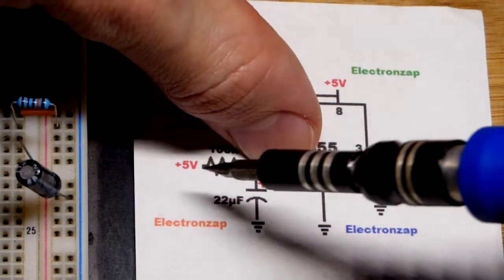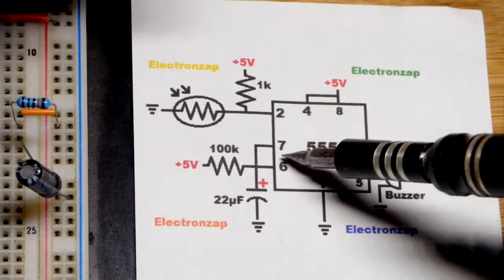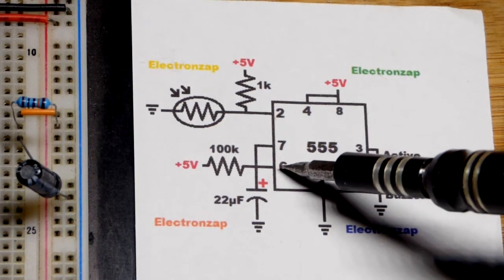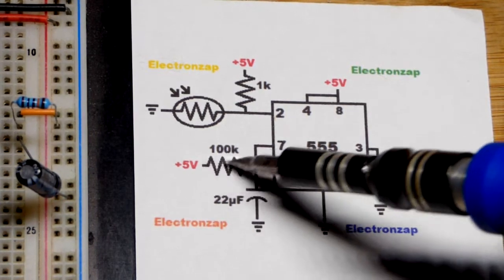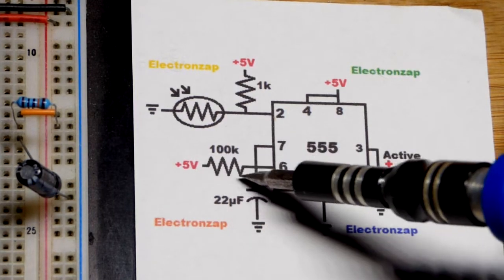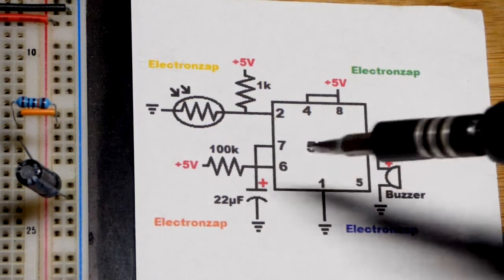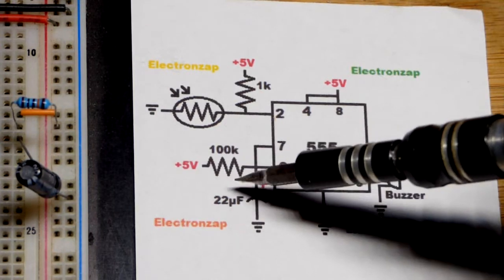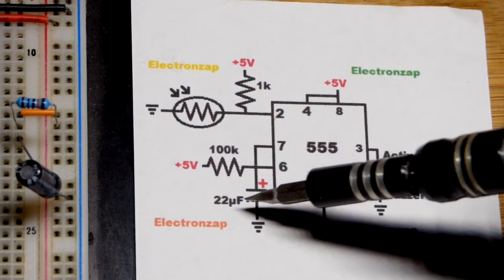At the same time it basically turns off pin 7. What we got is basically what you see right there. The capacitor can charge. Pin 6, the threshold pin, is just a sensor. Current doesn't go in or out, it just looks at the voltage. The capacitor starts charging to two-thirds supply voltage.